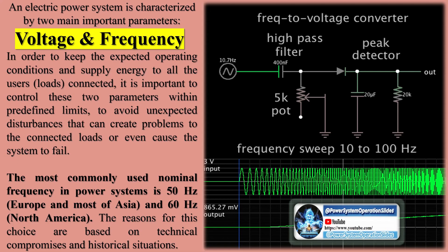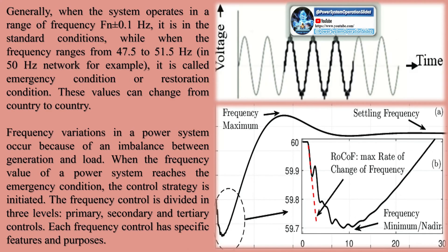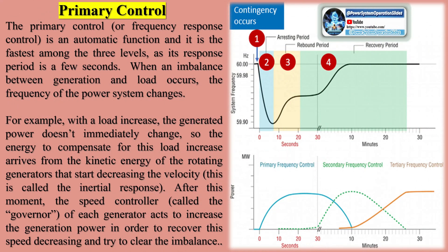An electric power system is characterized by two main important parameters: voltage and frequency. In order to keep the expected operating conditions and supply energy to all the user's loads connected, it is important to control these two parameters within predefined limits, to avoid unexpected disturbances that can create problems to the connected loads or even cause the system to fail. The most commonly used nominal frequency in power systems is 50 Hz in Europe and most of Asia, and 60 Hz in North America. Generally, when the system operates in a range of frequency plus or minus 0.1 Hz, it is in standard conditions, while when the frequency ranges from 47.5 to 51.5 Hz in a 50 Hz network, it is called emergency condition or restoration condition.